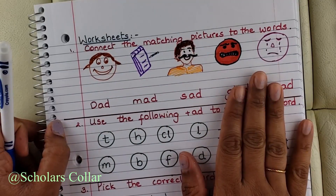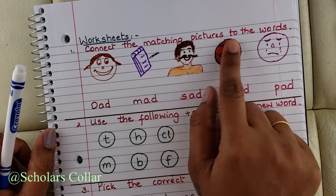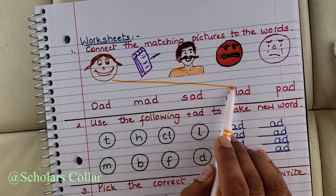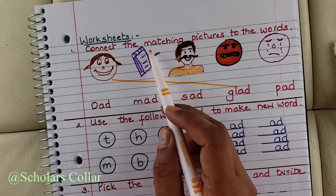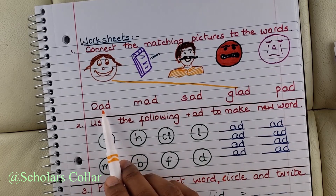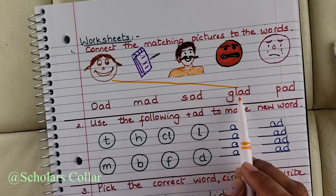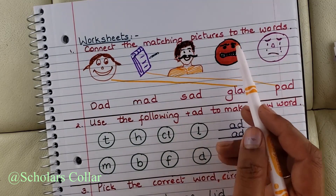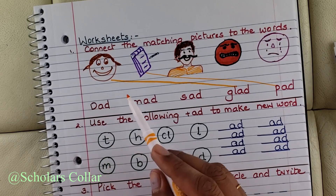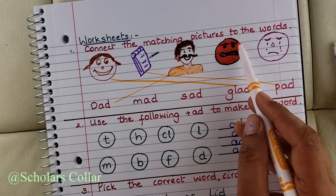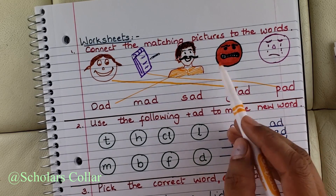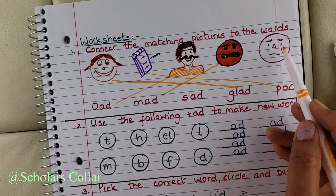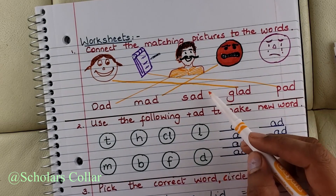Moving on to worksheets. Here we are connecting matching pictures to the words. The person is glad — connect that picture to the word glad. This is a pad — find the word pad: dad, mad, sad, glad, pad. Here it is, connected to pad. Looks like dad, right here. This is an angry face — he looks like he is mad. This person is upset — looks like he is sad.